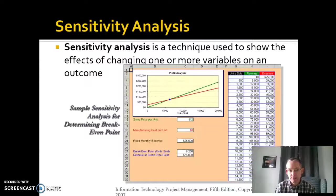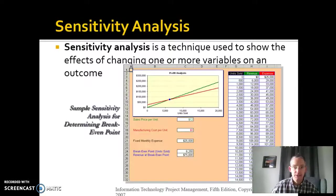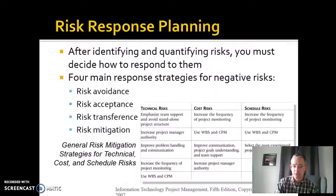Another method is sensitivity analysis, usually applied to unit cost kinds of things. For example, there's a risk that labor rates will increase because of union negotiations. If they increase by this much, here's the risk to the project's profitability; if they increase by this much, here's another impact. Sensitivity analysis helps you determine break-even points for decisions you might need to make based on risks that are out there.